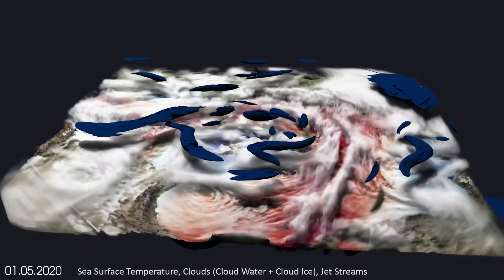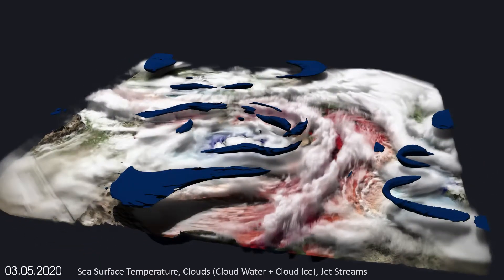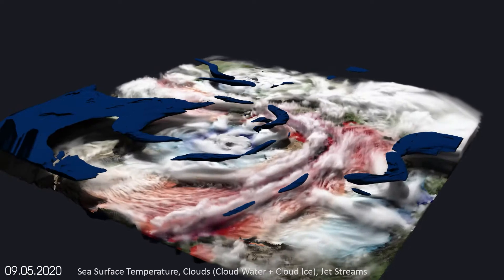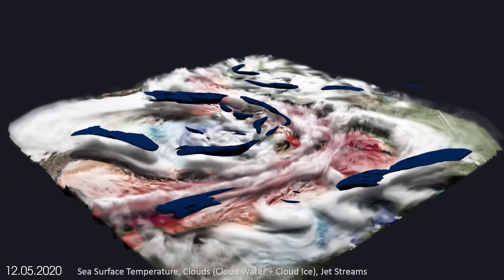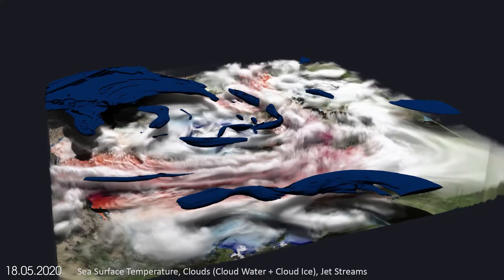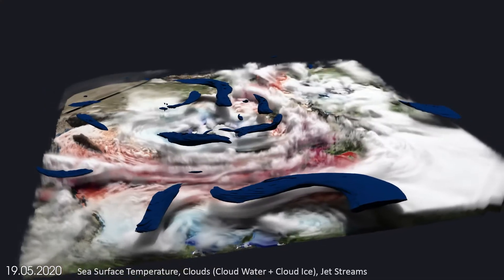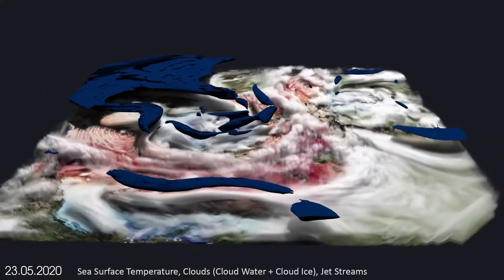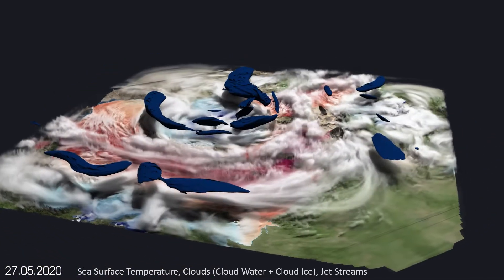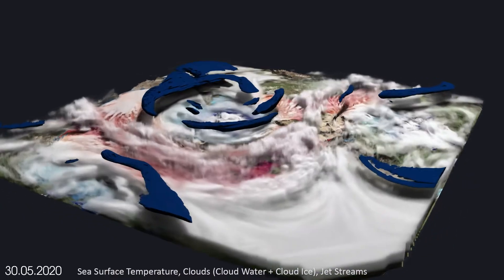High above the clouds are the jet streams, two bands of strong winds that circulate around our poles. Airplanes use these to save fuel, but they also strongly influence our weather, especially the alternation between high and low pressure systems. If the jet streams are weak, as in recent years, extreme weather events such as heat or cold waves are more common.